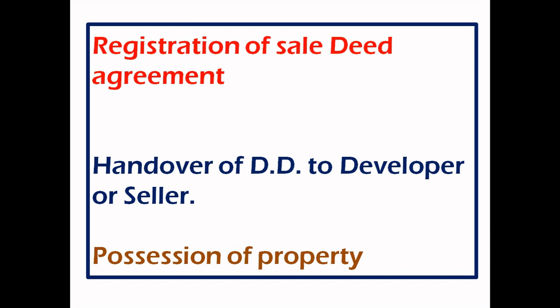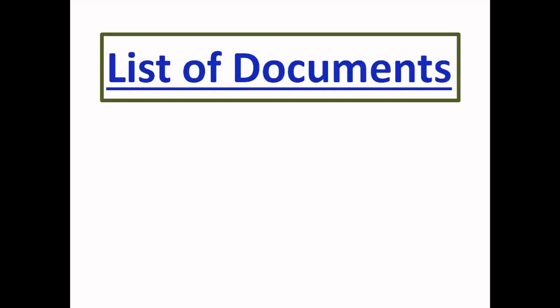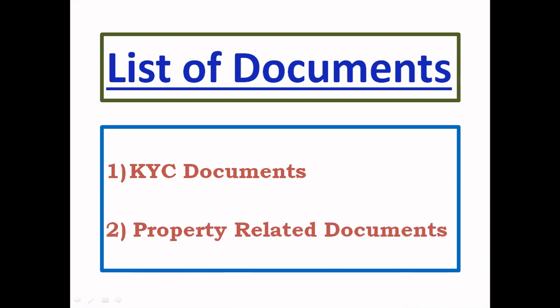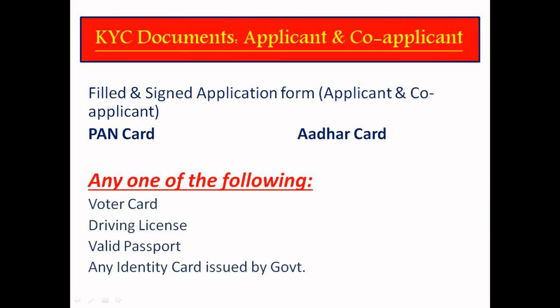This is the list of documents required. I am talking about a total of five categories of documents. The first documents are the KYC documents. The second are property-related documents. KYC documents are for both the applicant and co-applicant. You have a home loan applicant and a co-applicant. There is a filled and signed application form. A PAN card is a must. Address proof includes Aadhaar card, voter card, driving license, valid passport, or any identity card issued by the government.